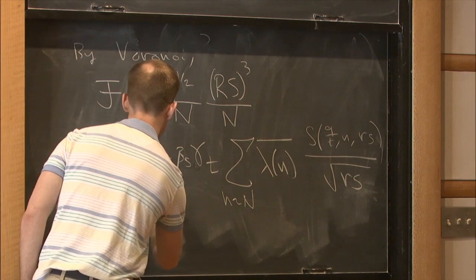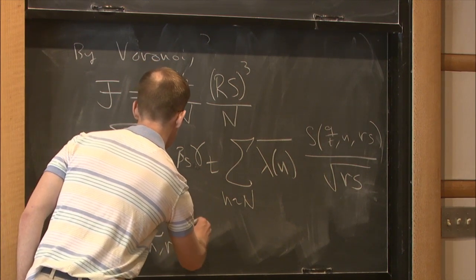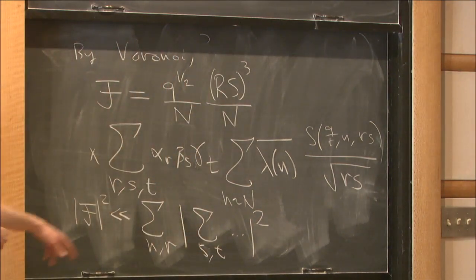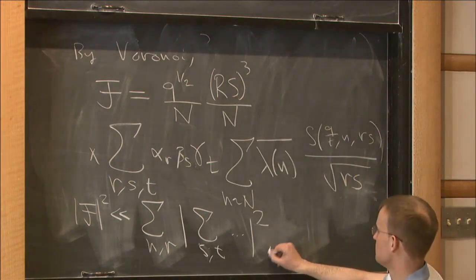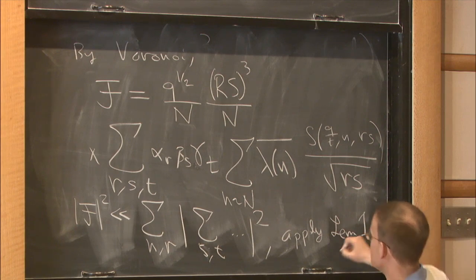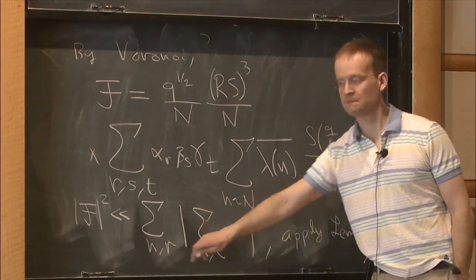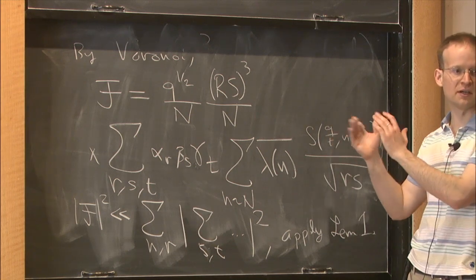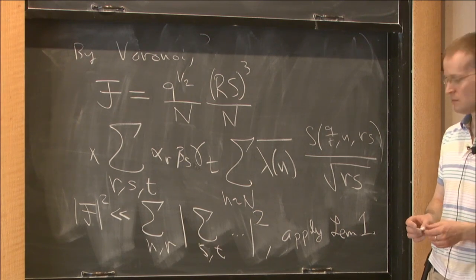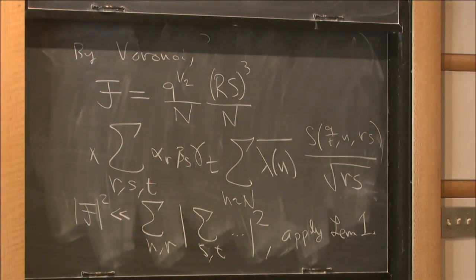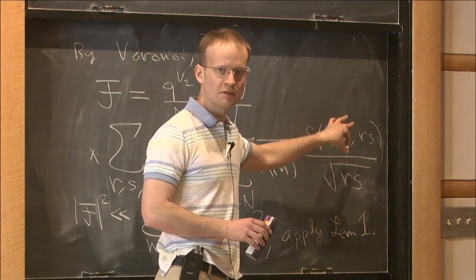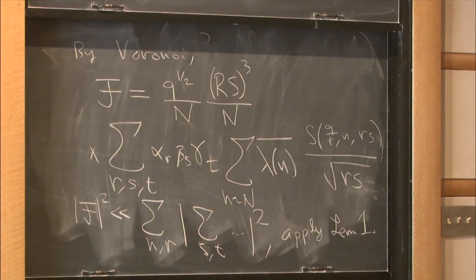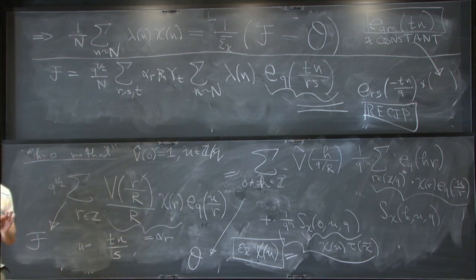Next we're going to apply this Voronoi summation formula I've written above, taking for C the modulus, the new modulus RS of the sum here. By Voronoi, F will now equal something like this and then we'll have an RS cubed over N factor coming in. So we'll have a sum over N times a sum over R, S, and T of alpha R, beta S, gamma T, a sum over N of size N, lambda N bar. And then in place of this exponential, we'll have a sum S of Q over TN RS divided by square root of RS. Then to bound this last expression, we apply Cauchy-Schwarz to get rid of the lambda and write it as a sum over N and R on the outside with a sum over S and T on the inside. Then we apply what I called lemma 1 earlier.